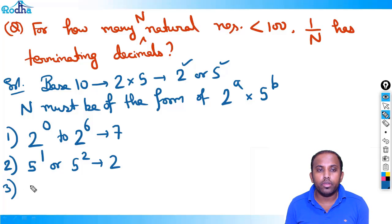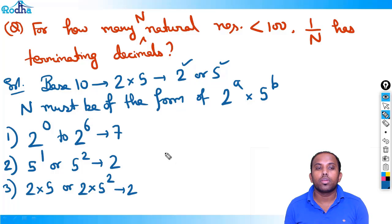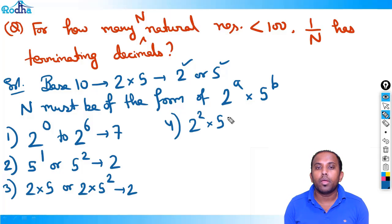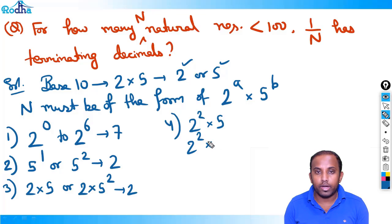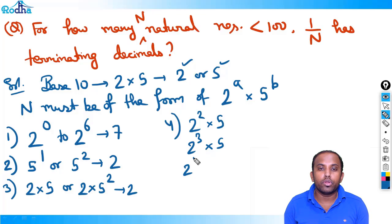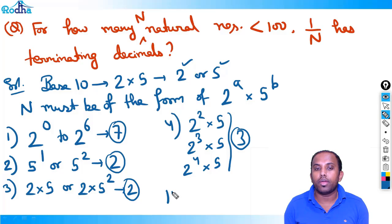Third, combinations of 2 and 5: 2×5=10, 2×5²=50 — 2 values with single power of 2. With 2²=4: 4×5=20 only (4×25=100, excluded). With 2³=8: 8×5=40. With 2⁴=16: 16×5=80. With 2⁵=32: 32×5=160 > 100, so stop. That gives 4 more values: 10, 50, 20, 40, 80 — actually that's 3 more combination values beyond the first two. Total: 7+2+2+3 = 14 values.